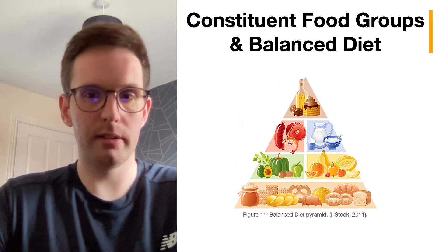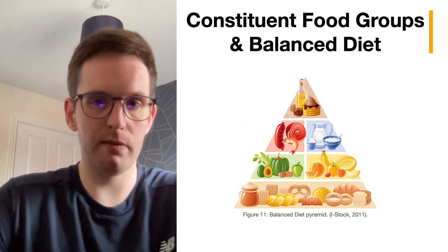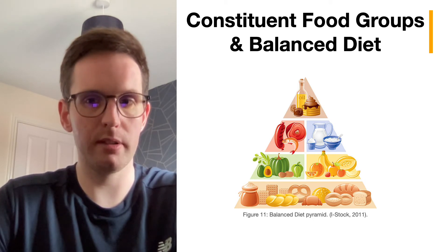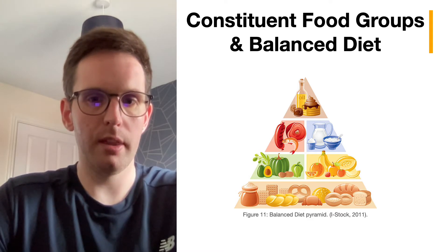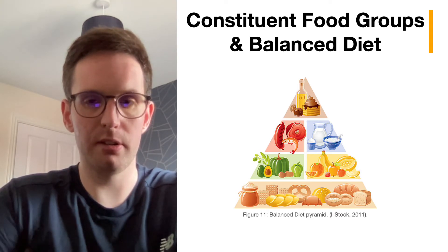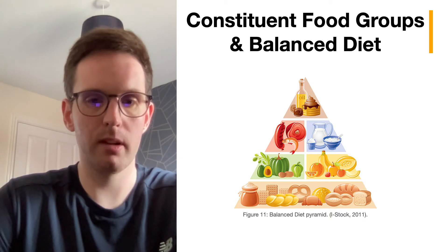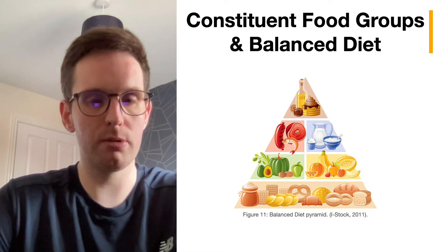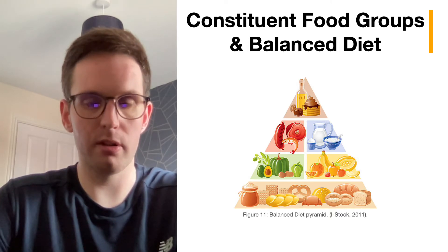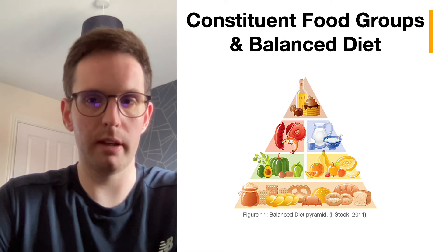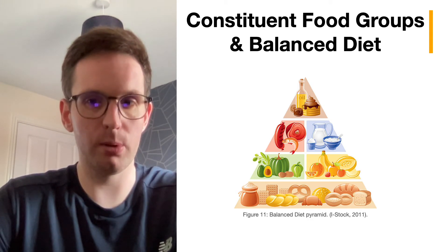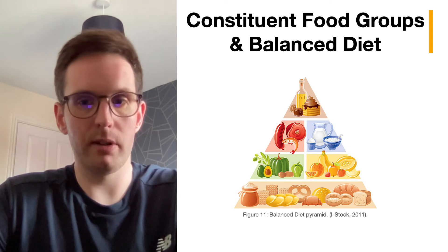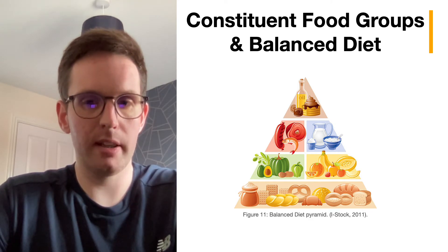A balanced diet is one that provides the body with sufficient macro and micronutrients in the form of calories, fats, proteins, carbohydrates, vitamins, minerals, and fluids without over or under consuming. This can help prevent dietary-related health conditions such as obesity, type 2 diabetes, high blood pressure, or cancer. As shown in the diagram, carbohydrates make up most of our dietary requirements, found in sources like rice, pasta, potatoes, and bread. Wholegrain varieties are more beneficial as they provide slow-release energy and are a good source of vitamins, minerals, and dietary fibre that regulate excretion of waste material.